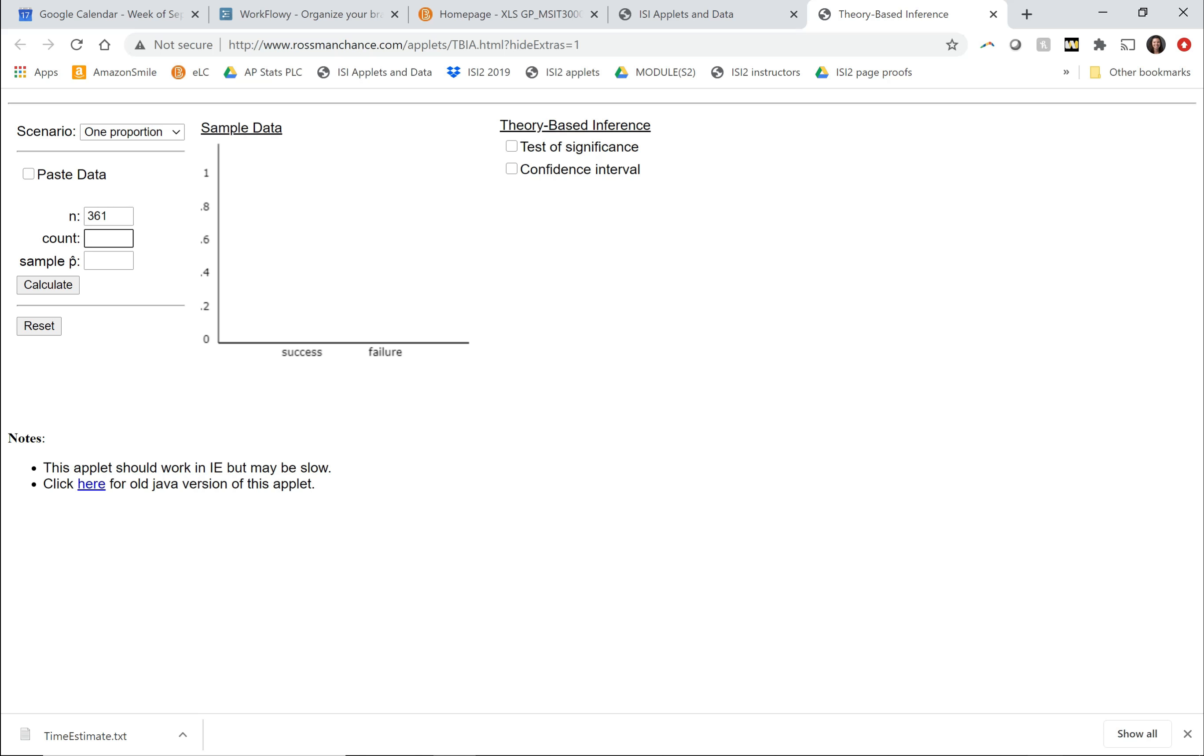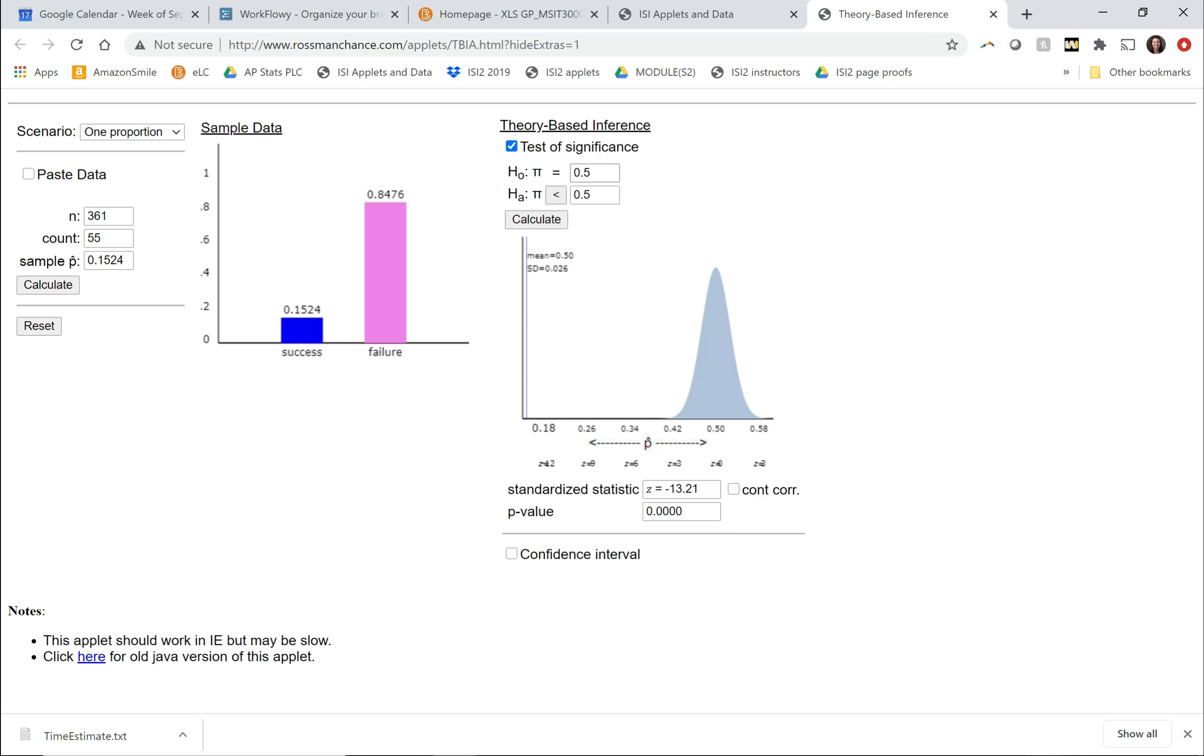And we're trying to figure out how big the number of deaths would have to be before we would find it convincing. So let's start low. Let's just do 55. Just a little tiny bit more than expected. So we're going to do a test of significance. The national average is 0.15. So that's our null hypothesis value. And we're trying to see if the death rate is higher at St. George's. So we're going to change this to greater than and click calculate.